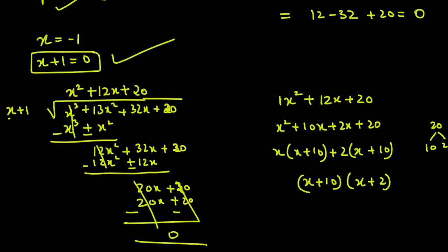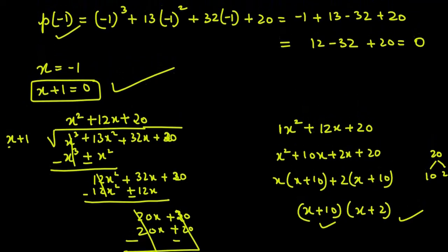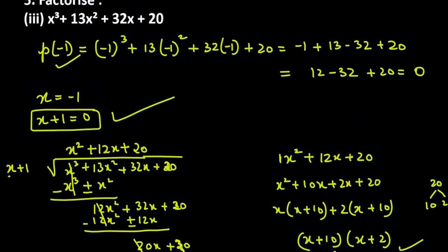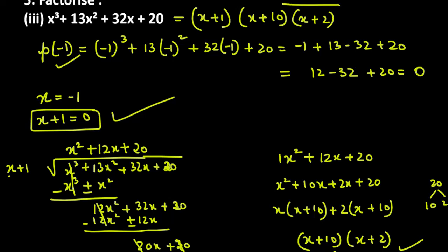So the three factors are: x plus 1 (first), x plus 10 (second), and x plus 2 (third). That means x cube plus 13x square plus 32x plus 20 can be written as (x + 1)(x + 10)(x + 2). If you multiply all three together, you'll get back the original polynomial on the left side.